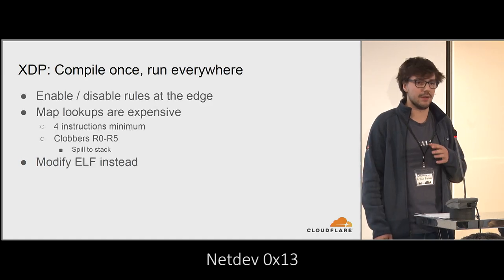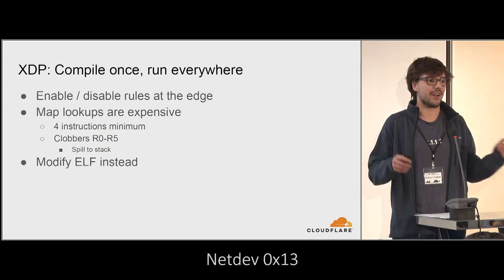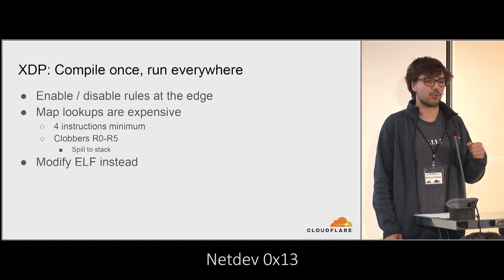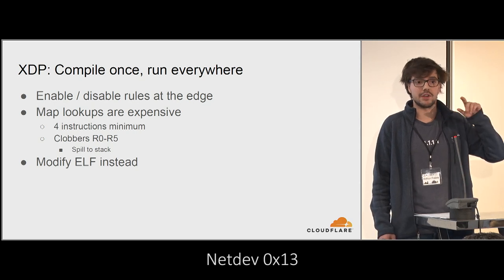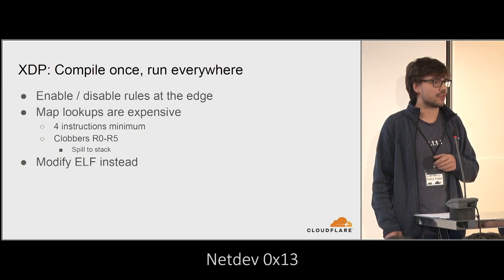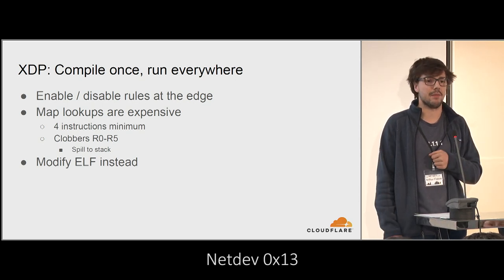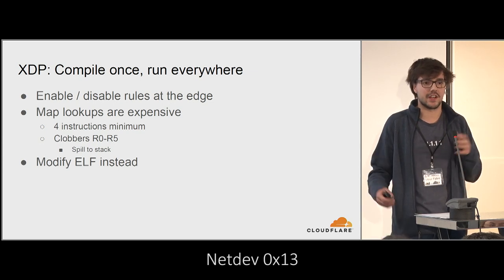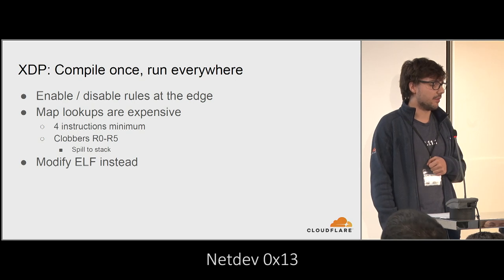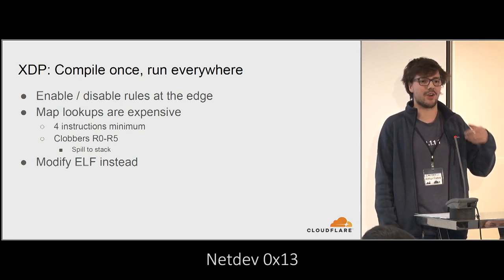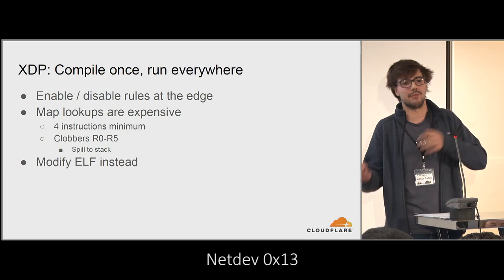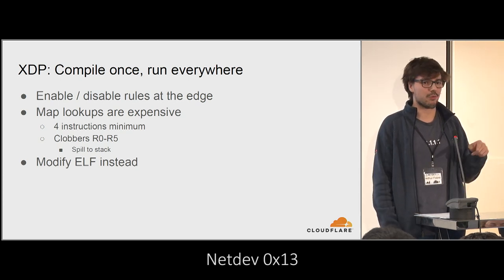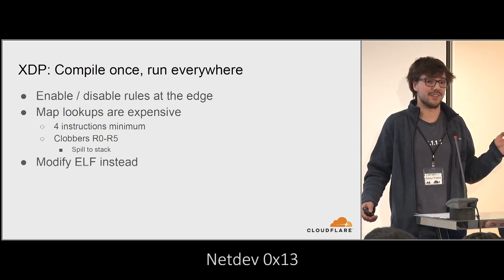Compile once, run everywhere is really key — we really don't want to be running Clang across our edge on thousands of servers. We also want to enable or disable rules from a single ELF. At first you think we can use a BPF map, store rule IDs as keys, and check if rules are enabled. But map lookups are really expensive: at minimum four instructions for the BPF calling convention plus checking the return value, and it clobbers R0 through R5, causing Clang to spill registers to the stack. On average, a single map lookup for a rule ended up being 10 instructions, which is a lot when you only have 4,000 and need hundreds of rules.